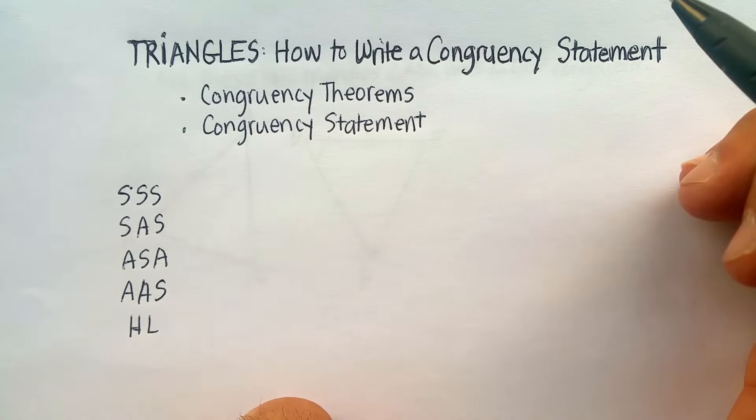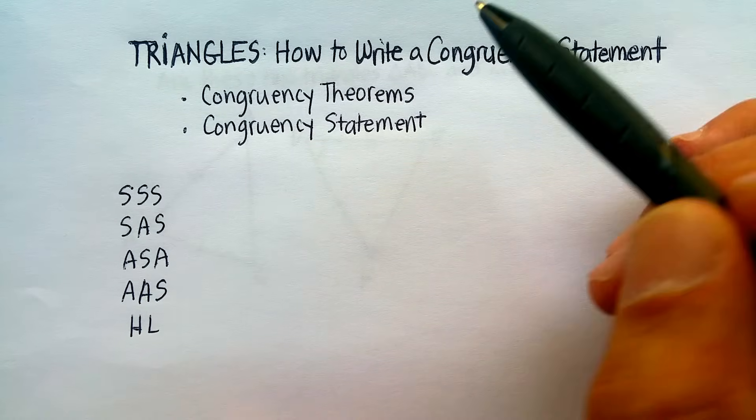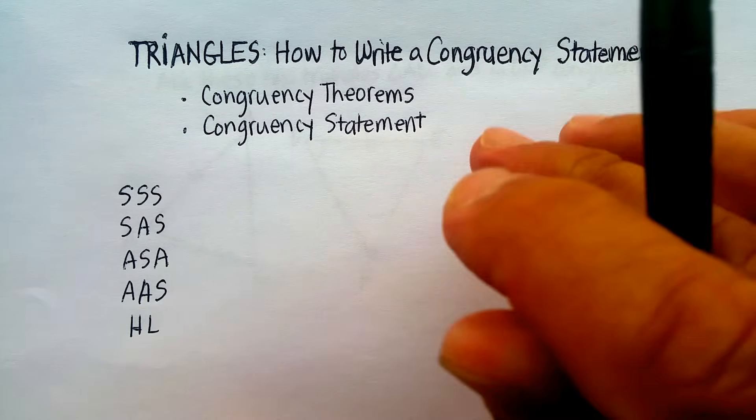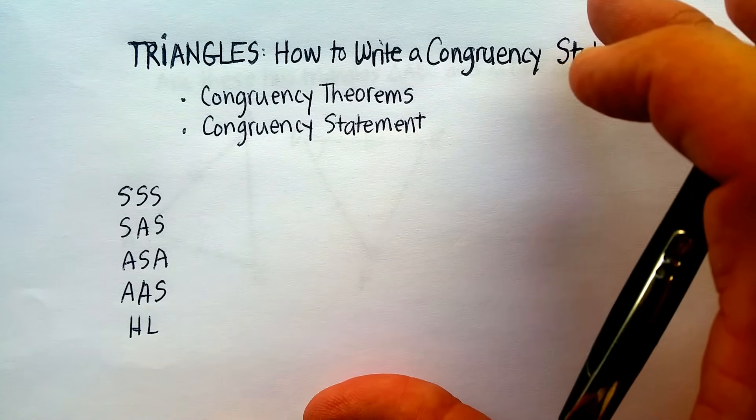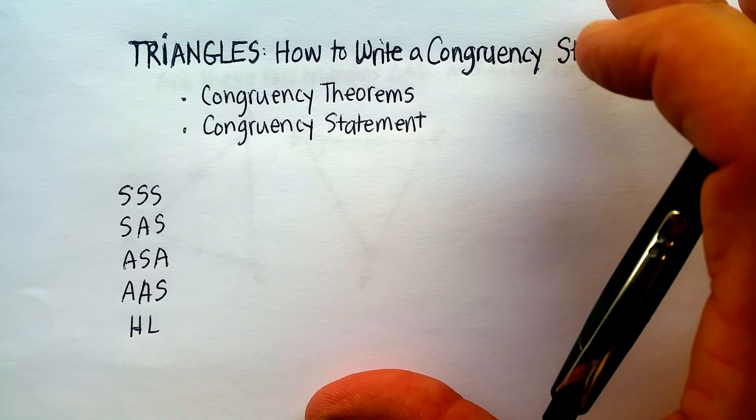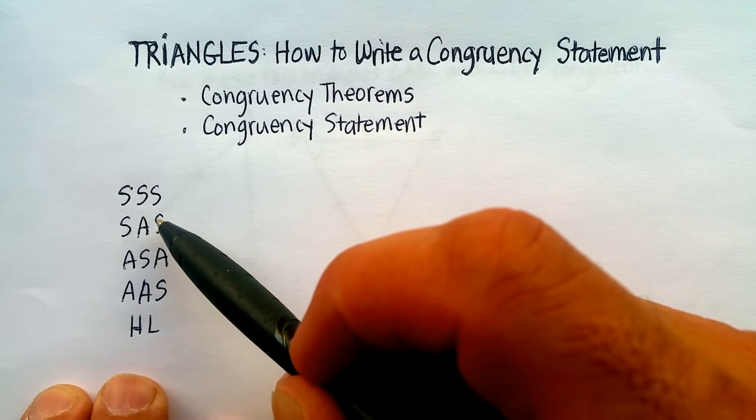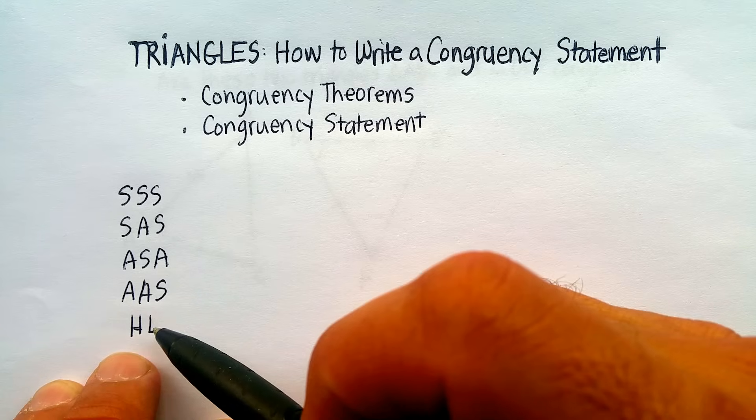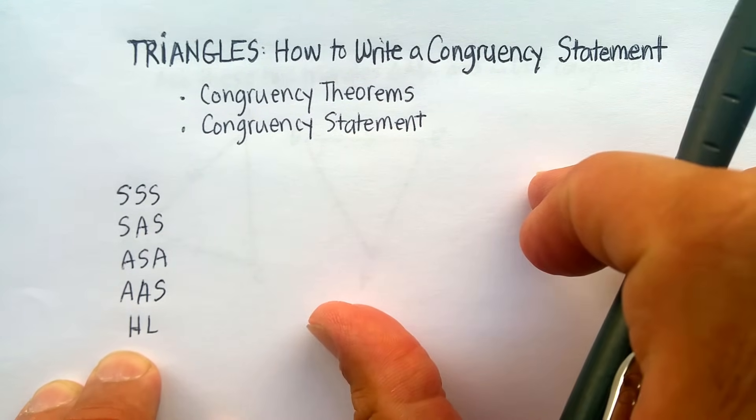Let's get started right away with congruency theorems. There are basically five. So if we're trying to prove that two triangles are congruent, or equal, or have the same characteristics in terms of the length of sides and the angles that are in the triangle itself, there are actually five different theorems that prove that triangles are congruent.